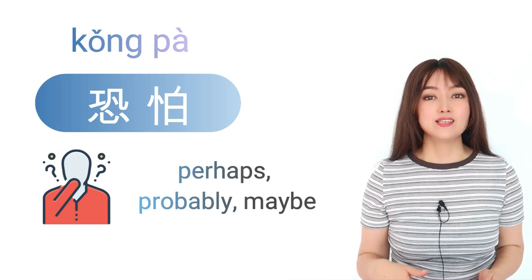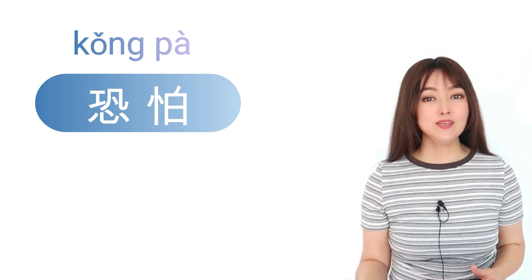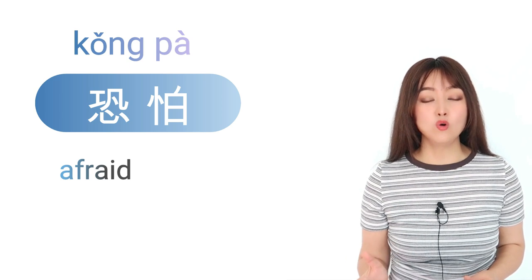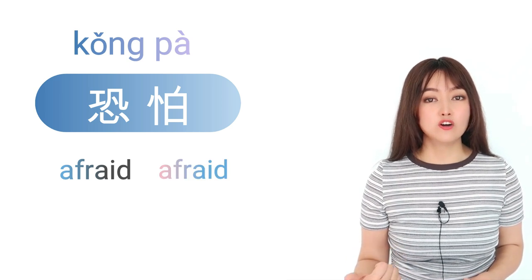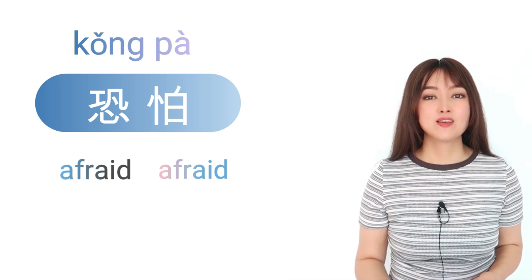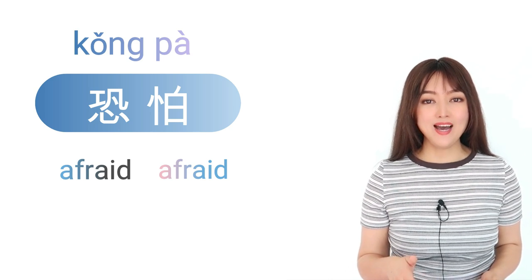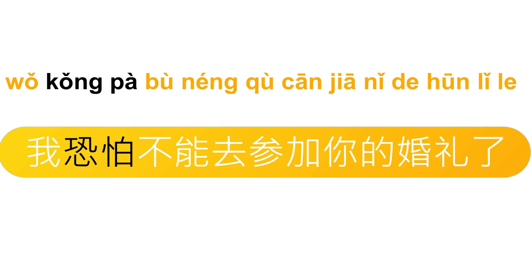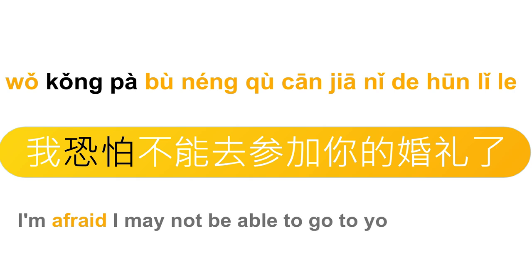下一个，恐怕，it's perhaps, probably, maybe。恐和怕的意思都是 afraid，like I'm afraid that perhaps, maybe。恐怕。我恐怕不能去参加你的婚礼了。I'm afraid I may not be able to go to your wedding. 我恐怕不能去参加你的婚礼了。